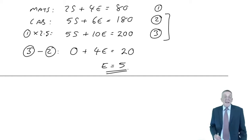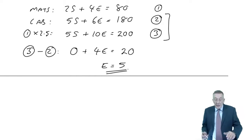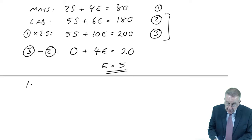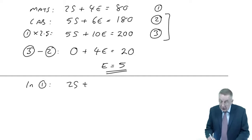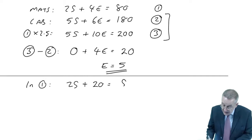If I subtract the second equation away from that third one, what happens? 5S minus 5S is 0. 10E minus 6E is 4E. 200 minus 180 is 20. And of course if 4E is 20, E equals 5.